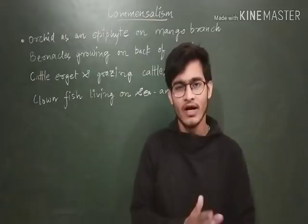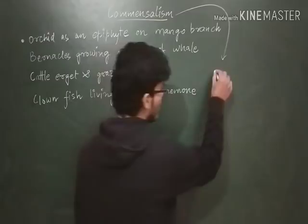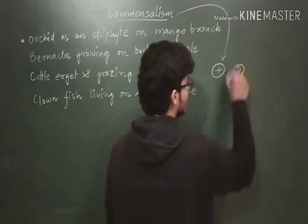Hello friends! Today we are going to talk about commensalism. We are already done with mutualism — a very interesting topic. Now it's time for commensalism. Commensalism is a kind of relationship in which one of the species gets benefited and the other species is not affected at all.